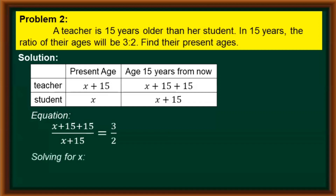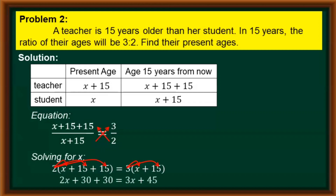We can solve for the value of x. Since both sides of our equation contain a fraction, we apply cross multiplication. So 2 is multiplied to the numerator and 3 is multiplied to the denominator. We distribute 2 and 3 to the parentheses, resulting in 2x plus 30 plus 30 equals 3x plus 45. On the left side, 30 plus 30 equals 60, so we rewrite the equation as 2x plus 60 equals 3x plus 45.